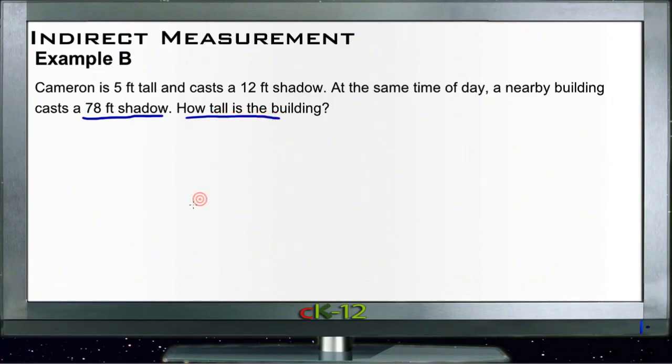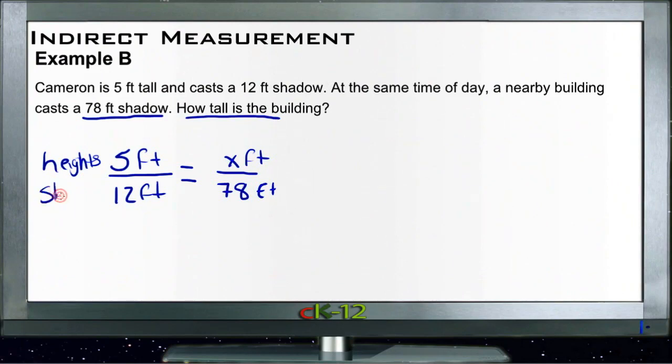So we have Cameron's height, 5 feet, and it compares to his shadow length, which is 12 feet, in the same proportion, the same ratio, that the building with a 78-foot shadow is casted by some height we don't know yet. So we have the heights on top, and we have the shadow lengths on the bottom.